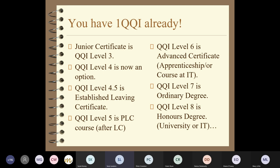The first thing to say is that you already have one QQI - the junior certificate is QQI level three, so you all have one. A level four is now an option for people moving on from third year. So you have a choice of doing QQI level four. Miss Ryan will talk about that in a moment.